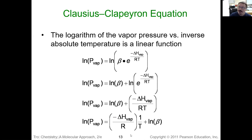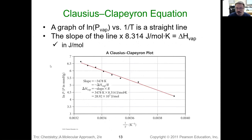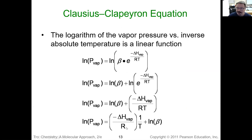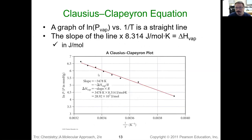All you need to worry about is that bottom equation. This is actually the equation for a straight line — there's my Y, my M, my X, and my B: y = mx + b. Here's my slope, and you can see what we have to plot to get a straight line. Instead of plotting pressure and temperature, if we plot the natural log of pressure and the inverse of the temperature, we'll get a nice straight line. The slope of that straight line is the negative heat of vaporization over R, so if we can find the slope, we can find the enthalpy of vaporization.